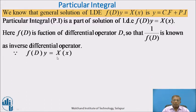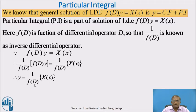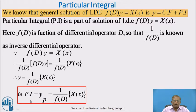Since f(D)·y = X(x), to remove f(D) from the left-hand side, operate 1/f(D) on both sides. Therefore 1/f(D) · [f(D)·y] = 1/f(D) · X(x). On the left-hand side f(D) gets cancelled, hence y = 1/f(D) operating on X(x). The value of this y is nothing but the particular integral, denoted by PI or y_p. Therefore PI = y_p = 1/f(D) · X(x). This is the formula we use to obtain the particular integral.